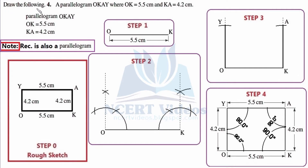We are on the last question, question number 4 of exercise 4.5 of chapter 4, Mathematics class 8th. The chapter name is Practical Geometry. We need to construct a parallelogram named OKAY such that the dimension of OK should be 5.5 centimeters and line segment KA should be equal to 4.2 centimeters. We jot down all the information for reference.